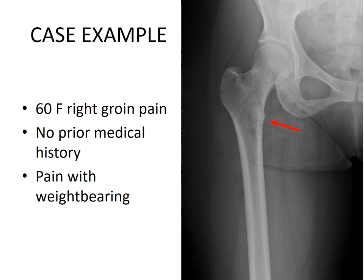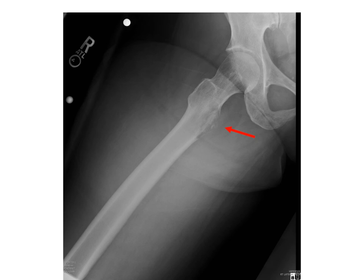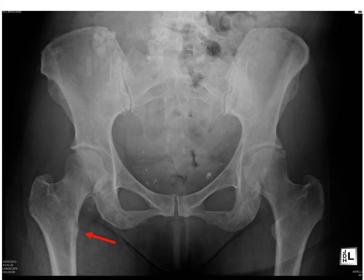Here's a case example: a 65-year-old woman with right groin pain, pain with weight bearing, and no prior medical history. Immediately the eye is drawn to the intertrochanteric, subtrochanteric lytic lesion in the bone. In a patient over 50 with a lytic bone lesion, consideration should be given for metastatic disease — remember prostate, thyroid, breast, lung, kidney, myeloma, lymphoma. The lateral view shows an even more compelling lytic destructive lesion of the lesser trochanter. A lytic lesion of the lesser trochanter should be considered pathognomonic for metastatic cancer until proven otherwise.